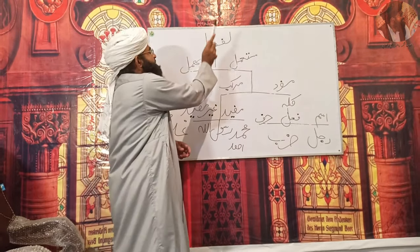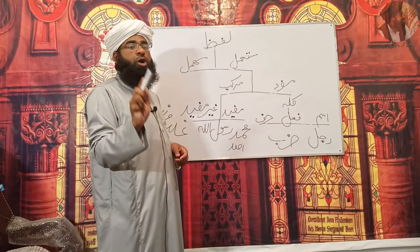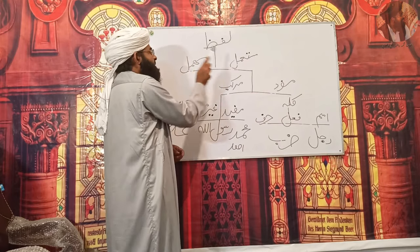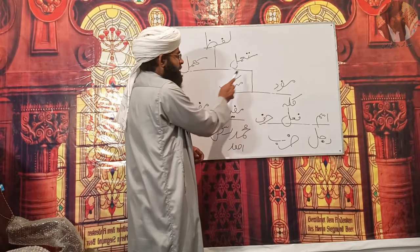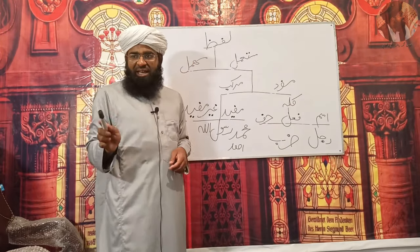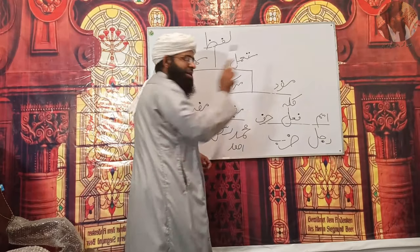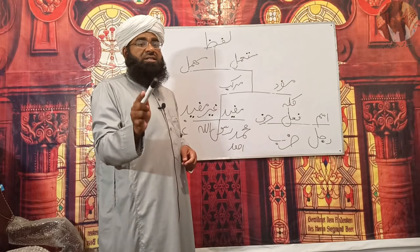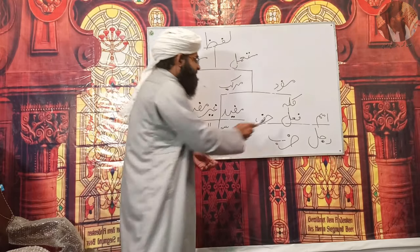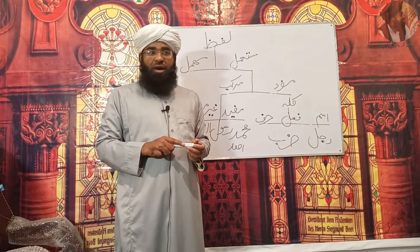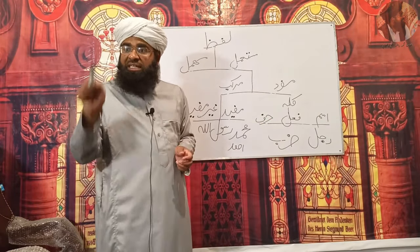خلاصہ: سب سے پہلے ہم نے پڑھا لفظ — لغوی معنی پھینکنا، اصطلاحی معنی وہ آواز جو انسان کے مو سے نکلے اور حروف پیدا ہو۔ لفظ کی دو قسمیں: مستعمل (با معنی) اور محمل (بے معنی)۔ مستعمل کی دو قسمیں: مفرد اور مرکب۔ مفرد کا دوسرا نام کلمہ۔ کلمہ کی تین قسمیں: اسم، فعل، حرف۔ اسم خود بخود معنی پر دلالت کرے، زمانے سے بغیر؛ فعل زمانے کے ساتھ؛ حرف خود بخود دلالت نہیں کرتا۔ مرکب کی دو قسمیں: مرکب مفید اور مرکب غیر مفید۔